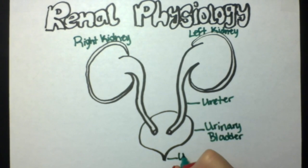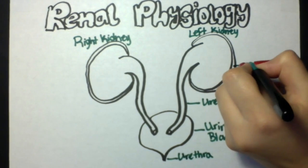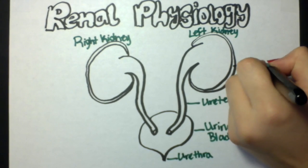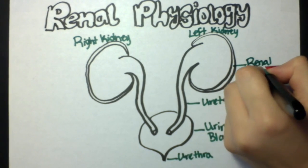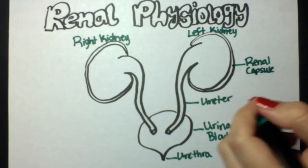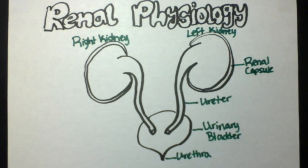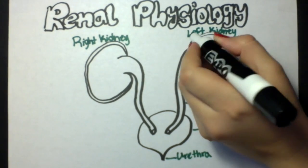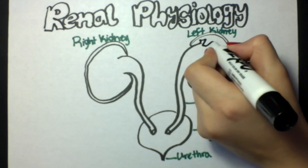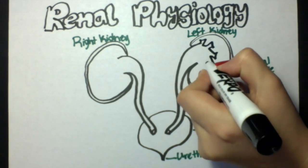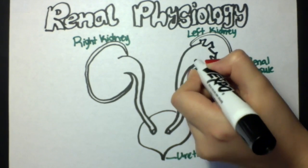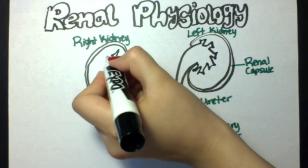The kidneys have many functions. Their excretory function includes excreting metabolic waste products such as urea and creatinine, as well as drugs and toxins.